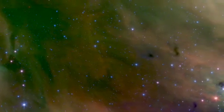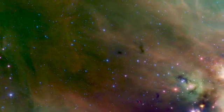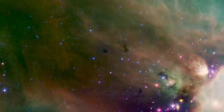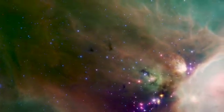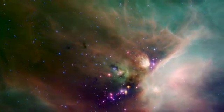Also known as Lynds 1688, this region contains over 300 baby stars with ages of up to a few hundred thousand years. The dusty envelopes around the youngest stars make them appear red in this rendering.